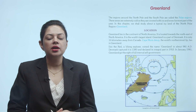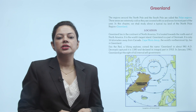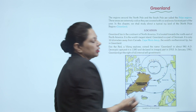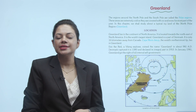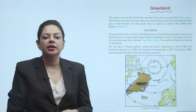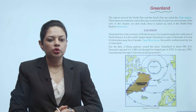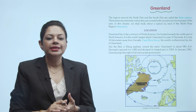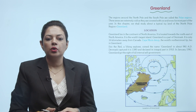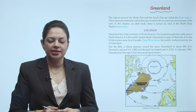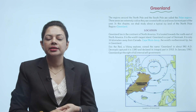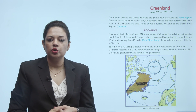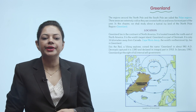Hello students, hope you all are doing good. Today we are doing a chapter named Greenland, which is a small island. The regions around the North Pole and the South Pole are called the polar regions. These areas are extremely cold as they are covered with ice and snow for most part of the year. In this chapter, we shall study about a typical icy land of the North Polar region, that is Greenland.